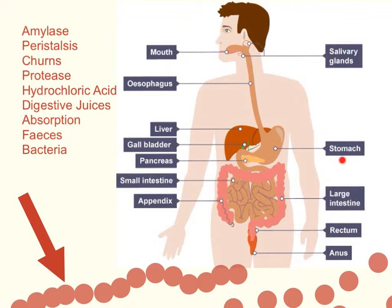The food then ends up in the stomach. The stomach churns the food and stores it for a period of time. It also adds another type of enzyme called protease enzymes, and these break down proteins into smaller molecules that we call amino acids.